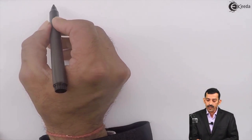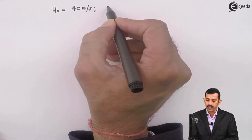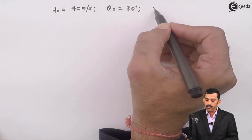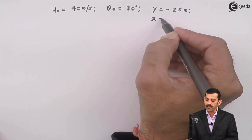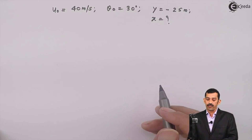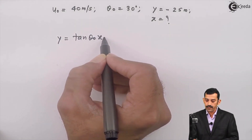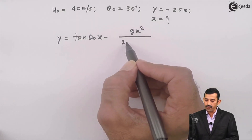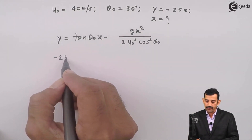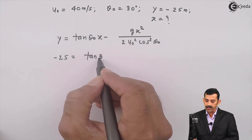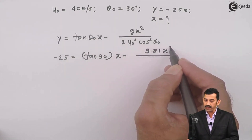Known values: u₀ = 40 m/s, θ₀ = 30°, and y = −25 m (since the final position is below the initial position). x is unknown. Using the equation of path: y = tan(θ₀)·x − g·x² / (2·u₀²·cos²θ₀). Substituting y = −25 meters.